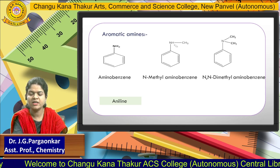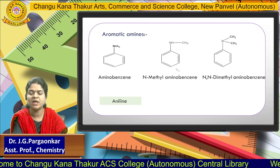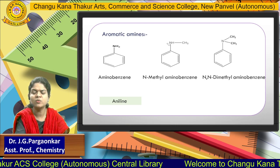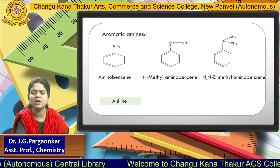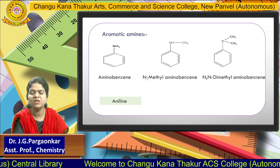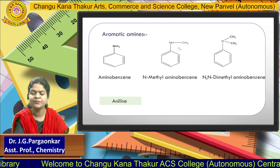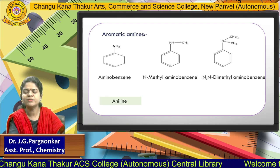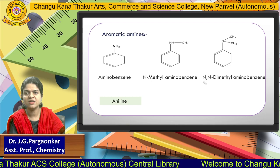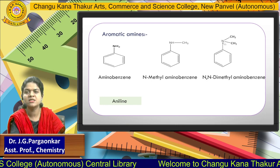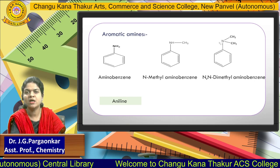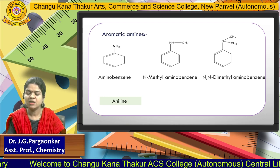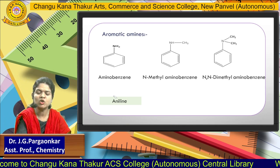In the second structure, at nitrogen one side is a methyl group and the other side is the benzene ring. So the IUPAC name is N-methylaminobenzene — N denotes the nitrogen position with a methyl group attached. In the third structure, two methyl groups are attached, so we write N,N-dimethylaminobenzene.